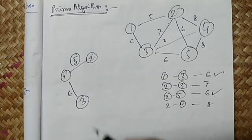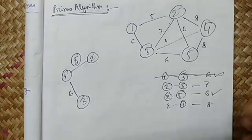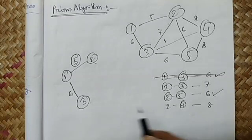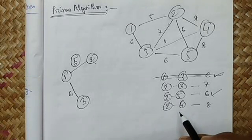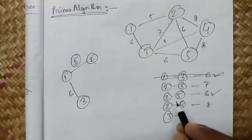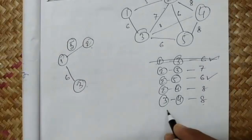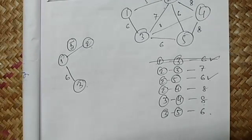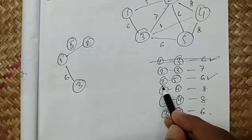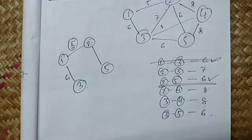Now we have nodes one, two, and three in our tree. We check how nodes two and three are connected to remaining nodes. Two-three is already taken. Three-four has weight eight, and three-five has weight six. The minimum is two-five with weight six, so we go with two-five.